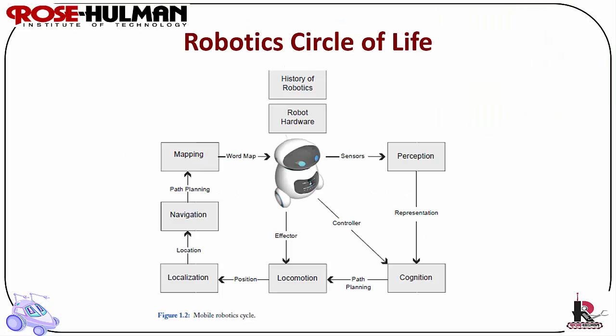Since we are at the end of the mobile robotics theory in this course, I felt it was appropriate to revisit the robotics circle of life. We have examined robotics history, components, perception, representation, cognition, locomotion, navigation, path planning, mapping, and localization. This course has laid the foundation for more advanced study into various branches of robotics by providing this broad overview. The final project will serve as the cohesive demonstration of the integration of all of your newly acquired mobile robotics skills and building a complete control architecture with navigation competencies.